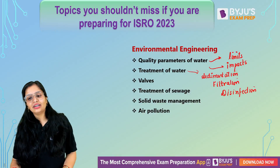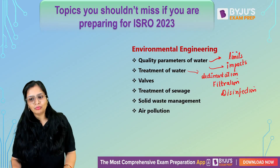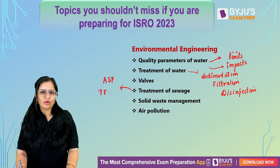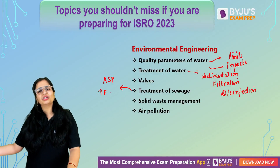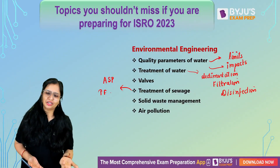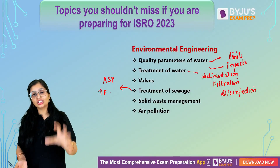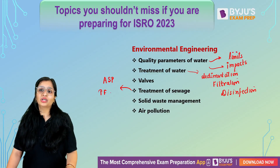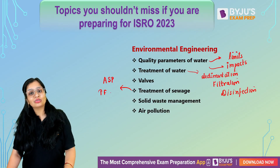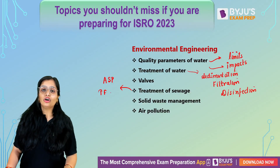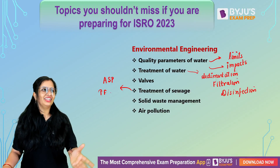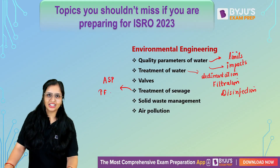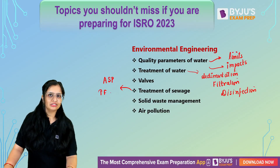Talking about treatment of sewage — the main topics from which questions have been asked are activated sludge process and trickling filter. Sometimes they ask simple questions: oil and grease to be removed by skimming tank, inorganic particles removed in grit chamber. Constantly asked topics include activated sludge, trickling filter, and oxidation pond. For example: activated sludge process requires which type of organisms — it is an aerobic suspended growth process. For solid waste management, they give you conditions and ask which method to use — Indore method, Bangalore method — or if waste has high calorific value, you go for incineration.